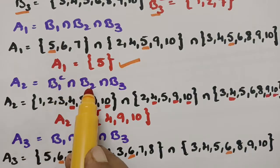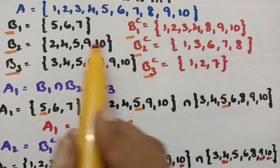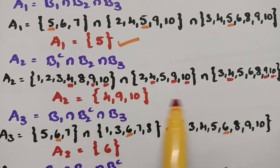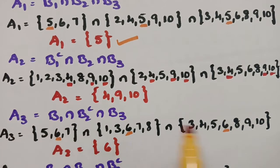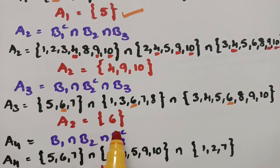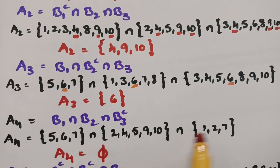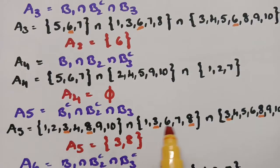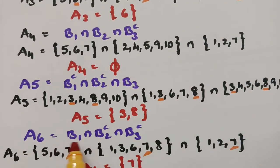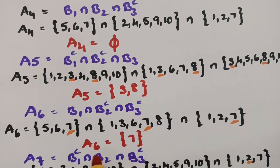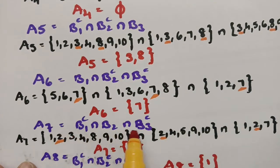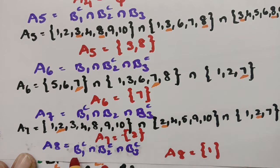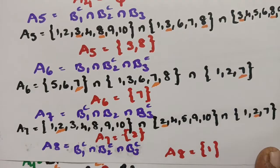A2 = B1_complement ∩ B2 ∩ B3, and the common elements are {4, 9, 10}. For A3 = B1 ∩ B2_complement ∩ B3, the common element is {6}. A4 = B1 ∩ B2 ∩ B3_complement has no common element, so it is the null set (empty set). A5 = B1_complement ∩ B2_complement ∩ B3 gives common elements {3, 8}. A6 = B1_complement ∩ B2_complement ∩ B3_complement gives {7}. A7 = B1_complement ∩ B2 ∩ B3_complement gives {2}, and A8 = {1}.